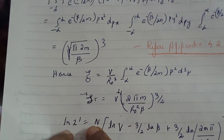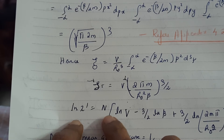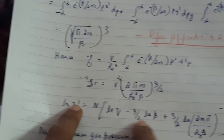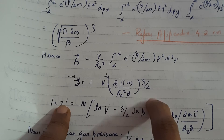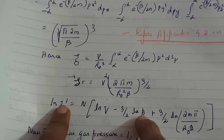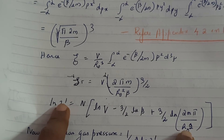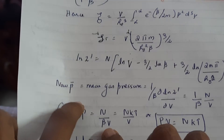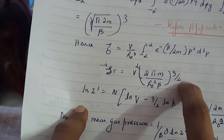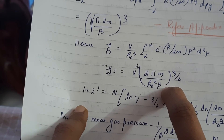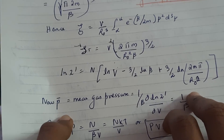Substituting that value into the term gives the result. So our final partition function — ln Z' — equals: bring in the log, you get a term with minus 3/2 ln beta, where beta is taken separately, plus 3/2 ln(2mπ/h₀²). Note this is actually h₀³: to bring it inside the bracket I made it squared and raised to 3/2, so when simplified it becomes h₀³ again — a very simple adjustment.